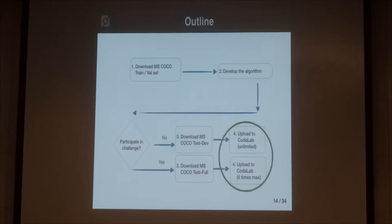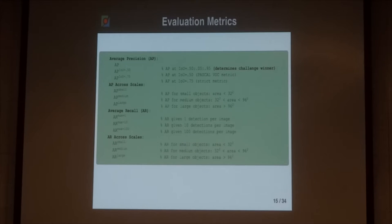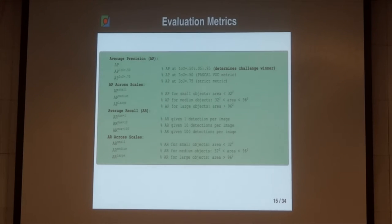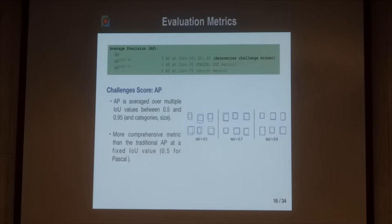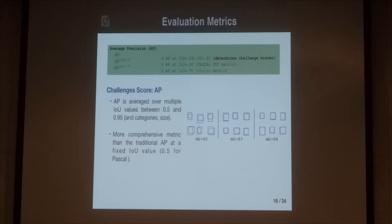After teams designed their algorithms and uploaded their results, we evaluated their submissions using a variety of different scores. Our first score was the MS COCO Challenge AP score, which is the mean average precision from intersection over union of the bounding boxes between 0.5 and 0.95. To give a more robust measurement, we averaged the AP over these different IOU thresholds — 0.5, 0.7, and 0.9.